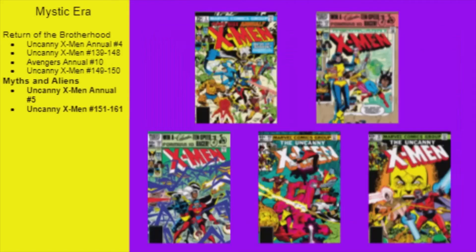Next is the 5th X-Men Annual, which has Cyclops and the Fantastic Four. The next 11 X-Men issues can all be read right in a row, introducing the Brood, Dracula, and Belasco. At the end of issue 160, Colossus' sister Illyana gets aged 7 years, and while a mini technically takes place there, it's not relevant until it releases a bit later.